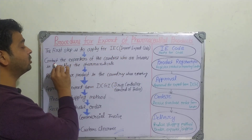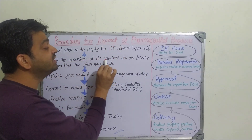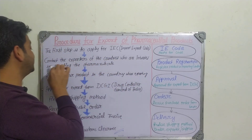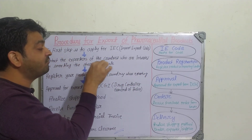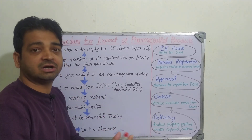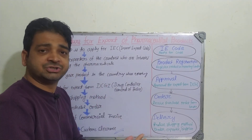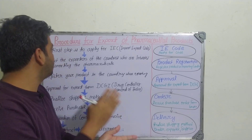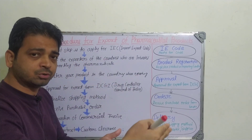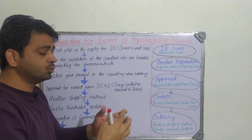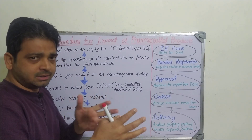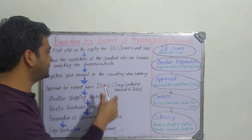The second step is to contact the exporters of the countries who are interested in importing the pharmaceuticals. For example, if you are sending to Singapore, Malaysia, Japan, or Australia, we need to contact those countries' importers who want to import our pharmaceutical products, so that the deal can be finalized.